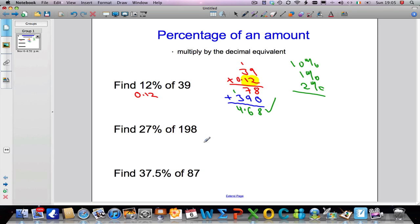Let's have a look at the second question. I want 27% of 198. So I'm going to multiply by the decimal equivalent. What is the decimal equivalent of 27%? Well, it's 0.27. To convert any percentage to a decimal, we just divide by 100. So I'm going to multiply 198 times 0.27.